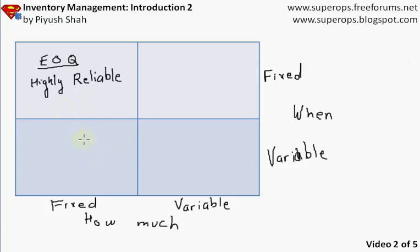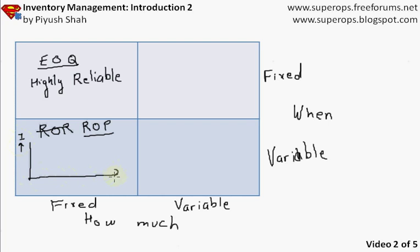When how much is fixed but when is variable, these are called reorder point systems, or ROP. In a reorder point system, we create a reorder point level on the inventory axis versus time. Whenever inventory reaches that point, I place an order, and after some lead time I receive the inventory. How much I order is fixed; when I order depends on usage rate — sometimes I use up faster and reach the reorder point sooner, sometimes usage is slower.